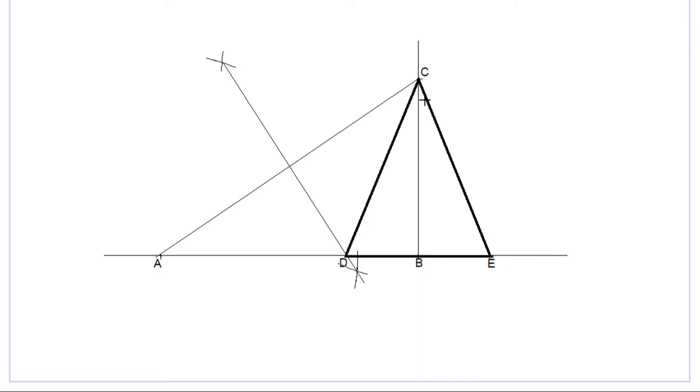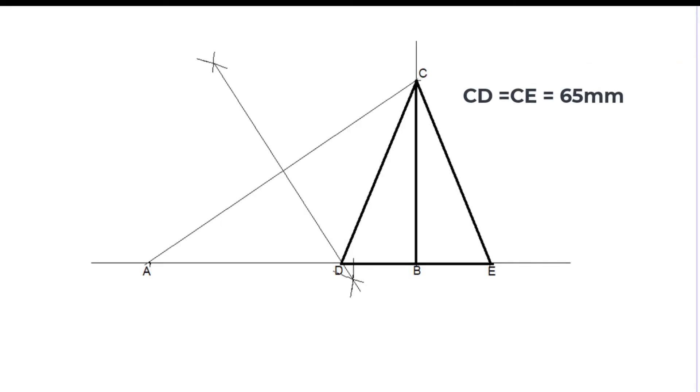Now measure the distances. The distances CD and CE are equal, and the distance is 65 millimeters. The distance DE is 50 millimeters. If you check it, the sum of 65 plus 65 plus 50 will give us a perimeter of 180 millimeters around the triangle, as required.